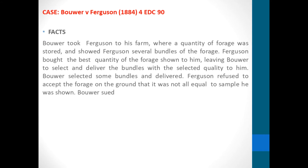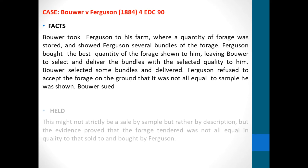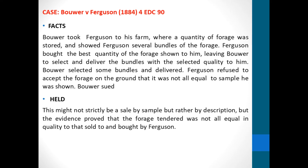Let us look at this case. Bauer took Ferguson to his farm where a quantity of forage was stored and showed Ferguson several bundles. Ferguson bought the best quality of the forage shown to him, leaving Bauer to select and deliver the bundles with the quality he wanted. Bauer selected some bundles and delivered them to Ferguson. Ferguson refused to accept the forage on the ground that it was not equal to the sample he had been shown, so Ferguson sued. It was held that although this wasn't a strict sale by sample but rather one of description, the evidence proved that the bundle standard was not at all equal to the quality sold to Ferguson. So the contract was not valid.